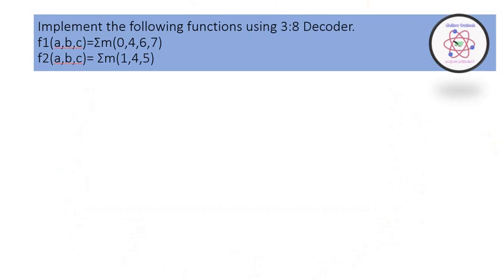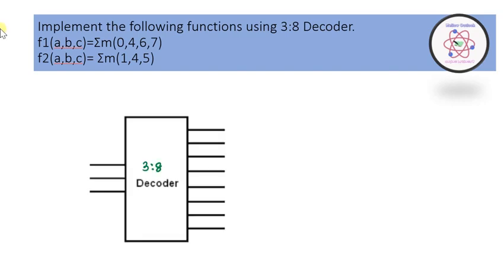The first question requires us to implement functions using a 3-to-8 decoder. Functions F1 and F2 are given in terms of min terms with three variables, denoted as A, B, C. At the output side, there are eight lines because with three input variables we can have eight combinations of output, from 0 to 7.